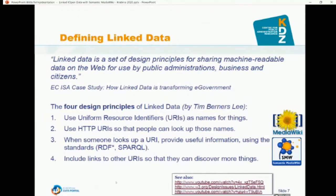There is also a very famous five-star schema of linked open data by Tim Berners-Lee. One star means make your stuff available on the web in whatever format, but choose an open license — because if you want to reuse data you find on the web, you must have license information to know whether you are allowed to reuse it. This can be done nicely in MediaWiki, where you can indicate what license your MediaWiki instance on the web uses. For the other stars, you really need Semantic MediaWiki. Two stars: make it available as structured data — for example, Excel rather than an image scan.